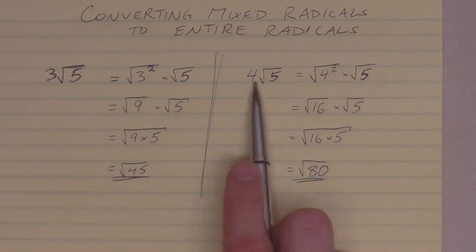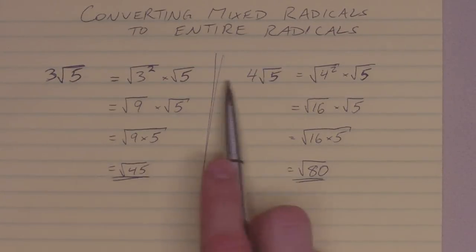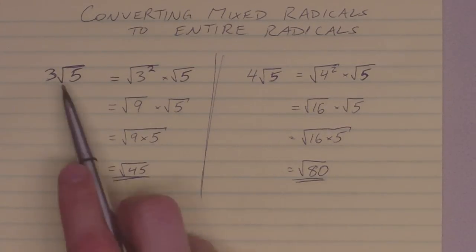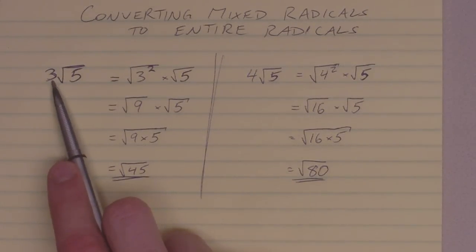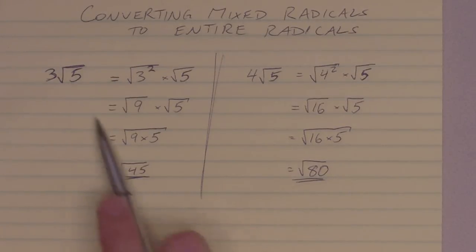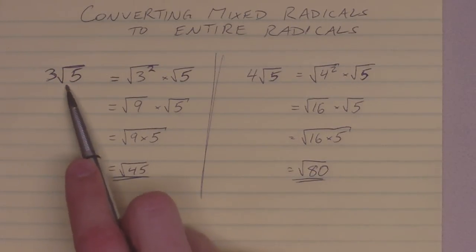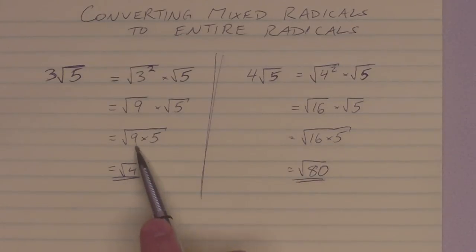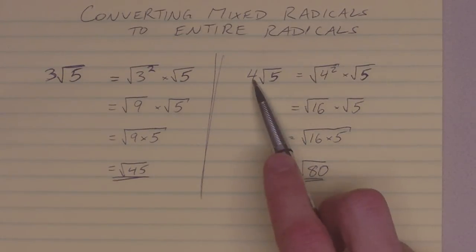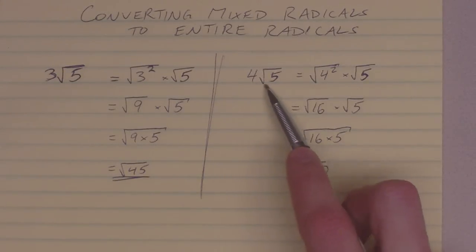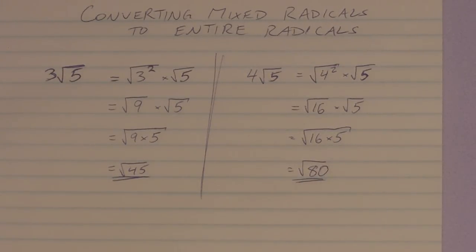I'm trying to take this 3, or the 4 here. I'm trying to move it underneath the radical. When I do that, I can take that coefficient, this 3 here. When I move it across the radical, I need to square it. When it becomes squared, it becomes a 9, and then I multiply that 9 by the 5. When I take this 4 and it crosses underneath the radical symbol here, I square it. It becomes a 16. I end up with 16 times 5 and root 80.